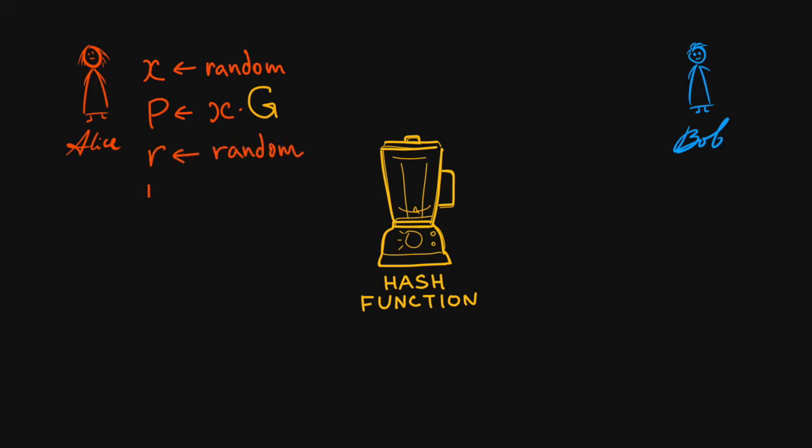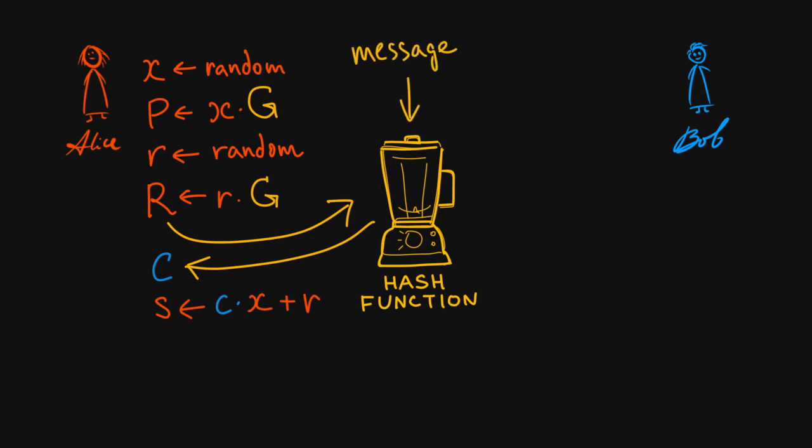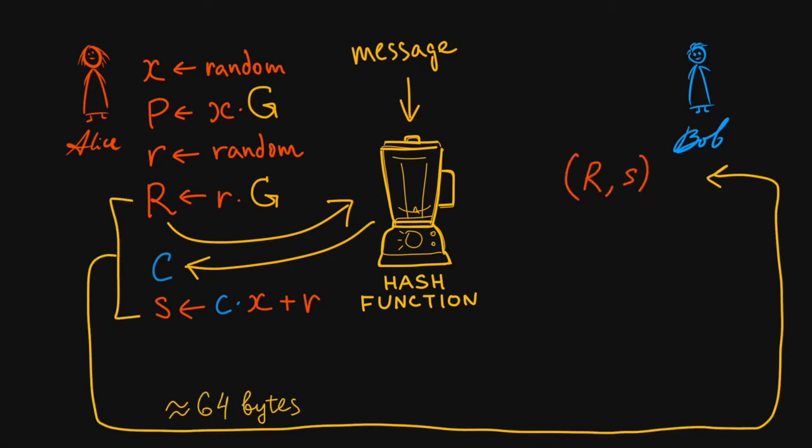Instead of sending commitment R to Bob, Alice puts it into a hash function. The hash function returns a pseudo-random challenge C. The security promise of a good cryptographic hash is that it is infeasible to choose an input data for any desired output, so Alice won't be able to choose how many times to subtract a public key from R and then have a hash function return that exact number. The hash function will be customized for each message, so a signature on one message cannot be reused on another message. Now, Alice has a 64-byte signature consisting of the nonce-commitment R and the siglet S. She sends it to Bob.